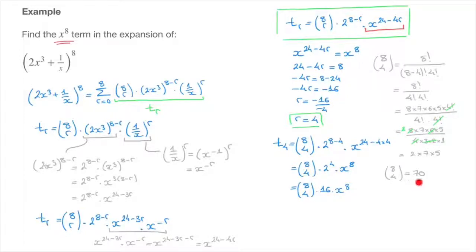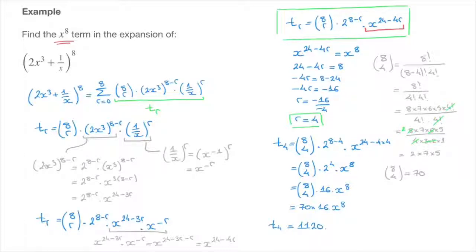Now that we have this result, we go back to our calculation and state it equals 70 times 16 times x to the power of 8. And 70 times 16 is 1,120. So our final answer is: the x to the power of 8 term is t_4 equals 1,120 times x to the power of 8. We've found the x to the power of 8 term without writing all of the terms of this expansion. And that's it for this tutorial.